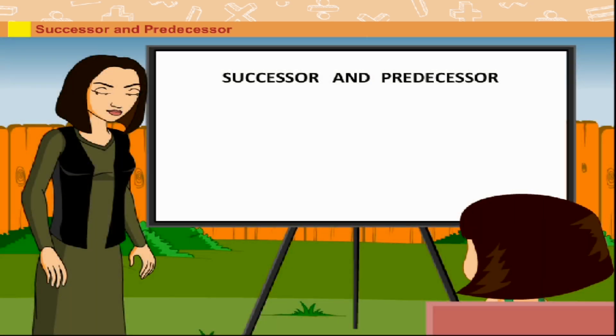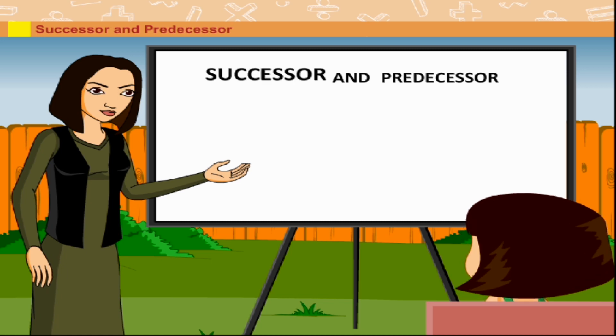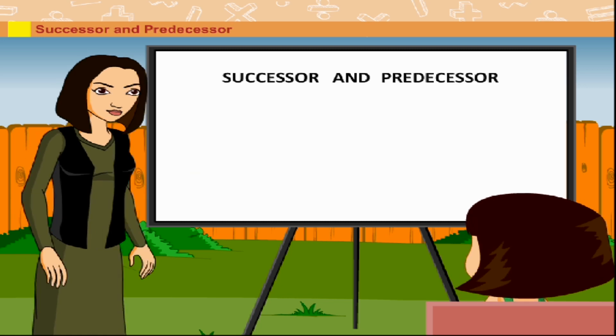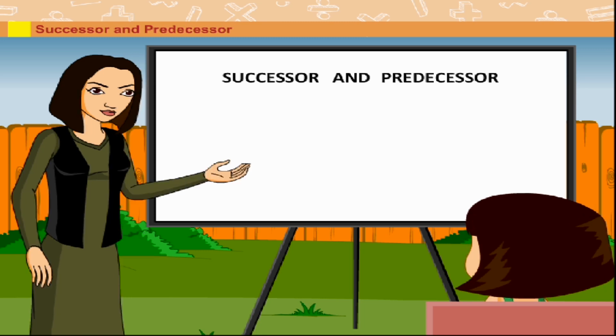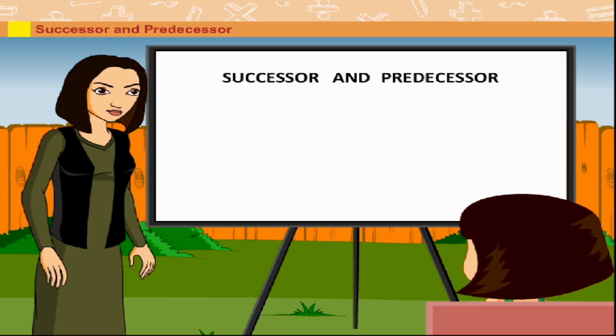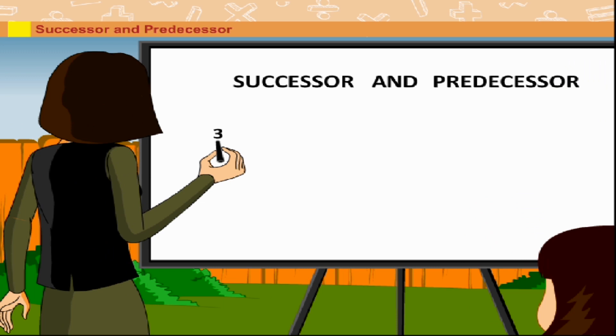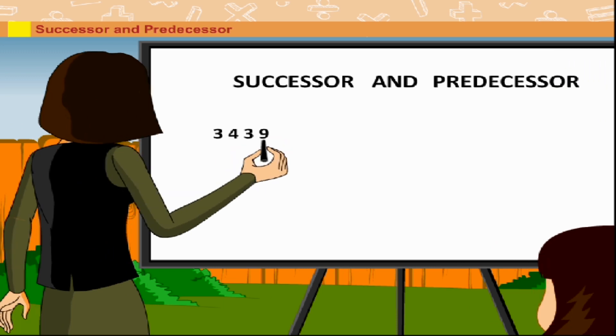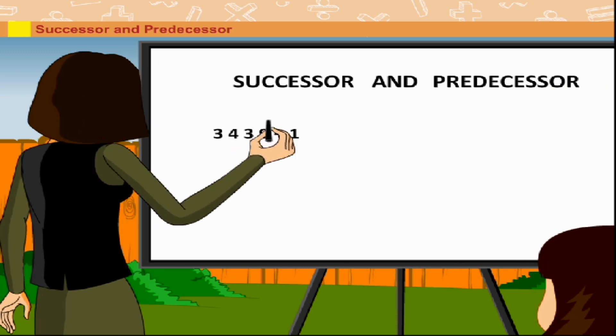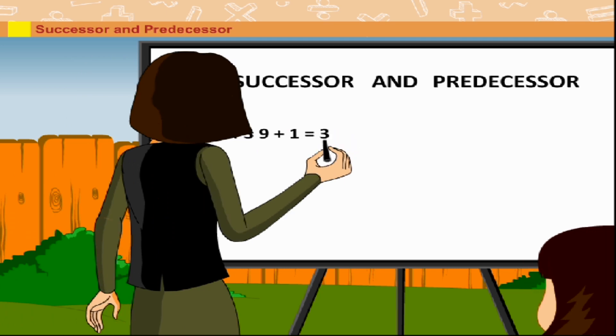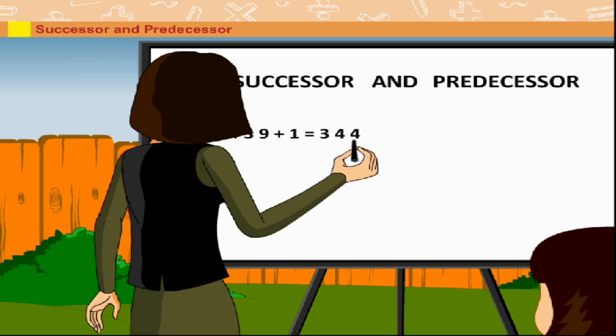Successor and Predecessor. Rani tells Shanta about successor and predecessor. She explains that when we add 1 to a number, the sum obtained is called the successor of the number. For example, 3439 plus 1 is equal to 3440.